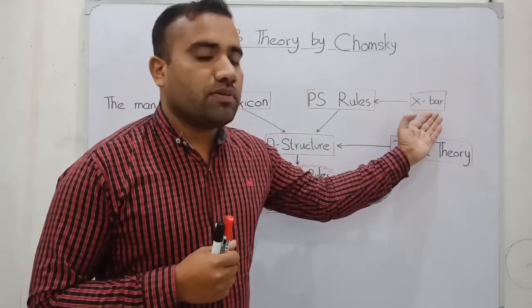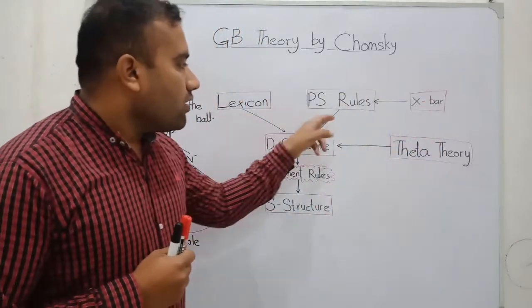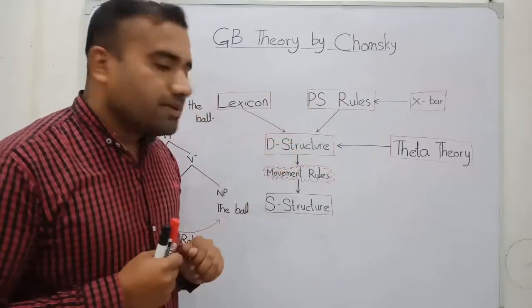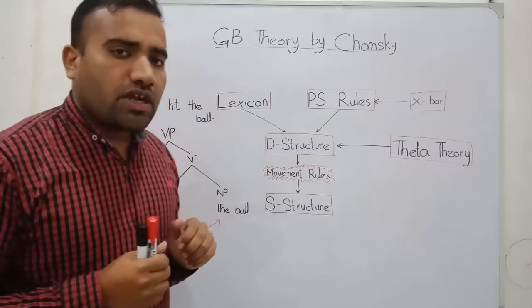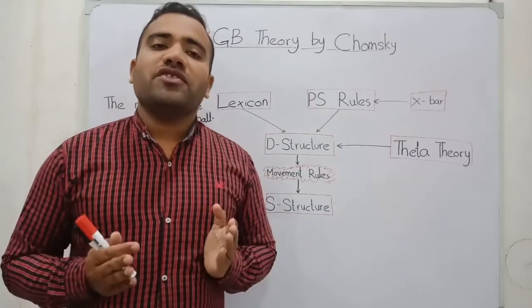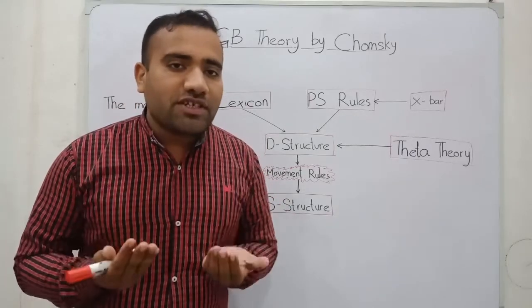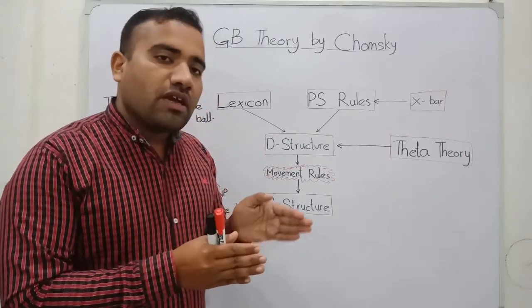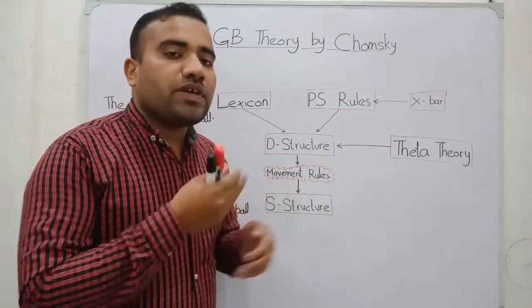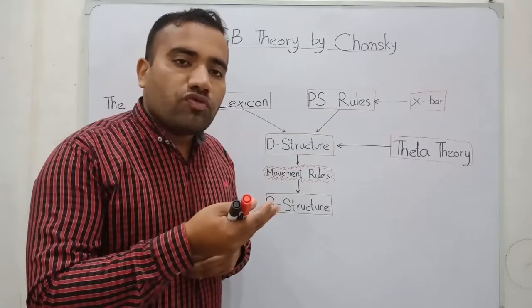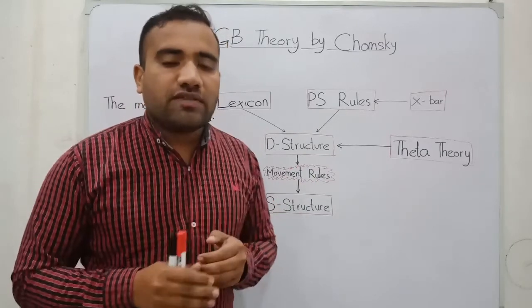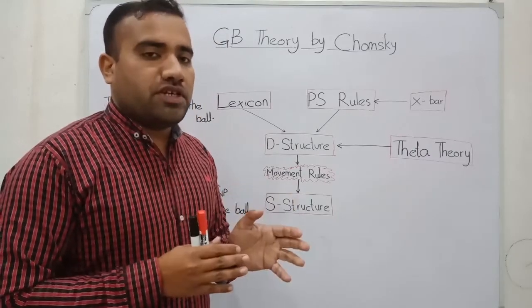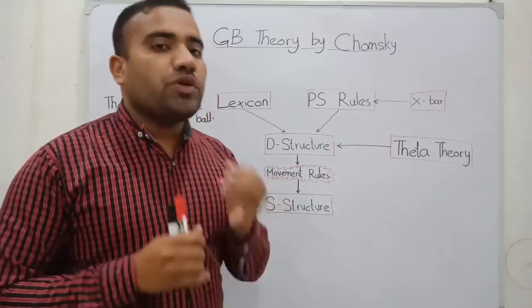If these things converge, we make the D-structure. The question is: how we can generate the D-structure? If our D-structure has been generated, then this structure will be moved into the second structure, that is the S-structure. For generating the D-structure, we must need one module that controls the D-structure.